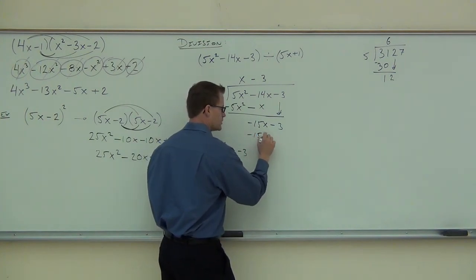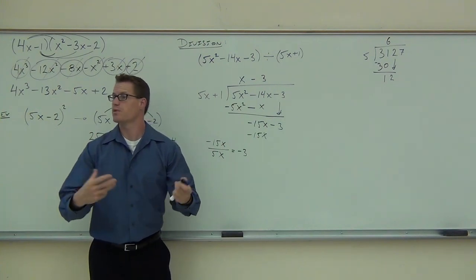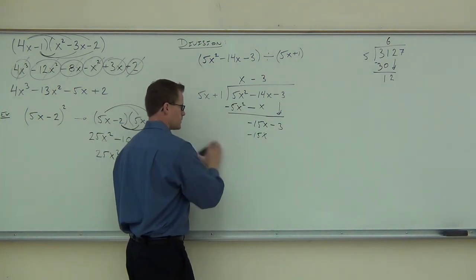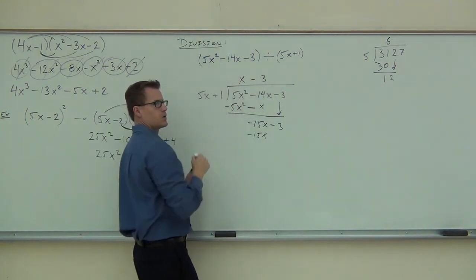Right there, you can check your work. Did we do it right? Yes. Yes, we did, because that's the exact same thing. That's what we want. We've got to keep going, though. We're also going to do negative 3 times positive 1. How much is that? Okay.